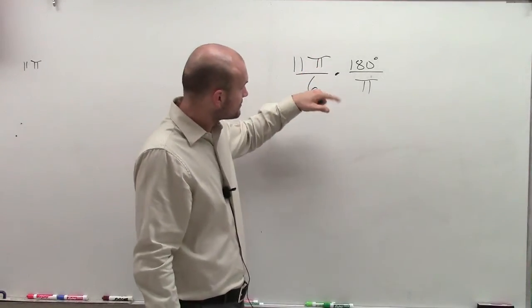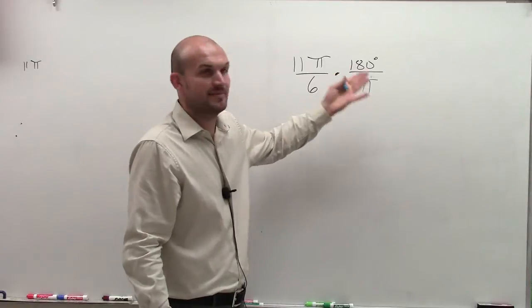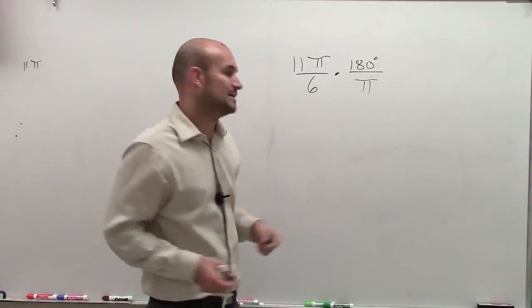So when I look at this, if you notice, my pi are going to divide out, right? They're going to divide to make 1, leaving me only with one other unit, which is degrees. Therefore, my answer is now going to be in degree mode.